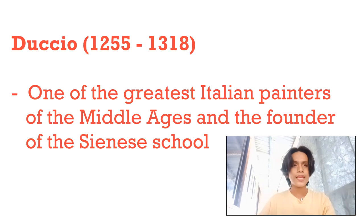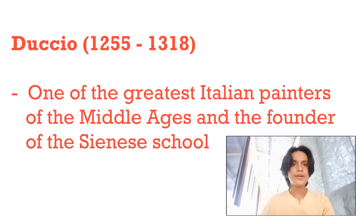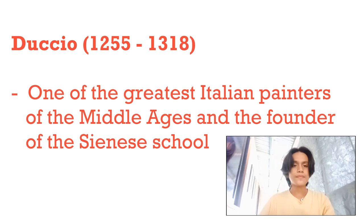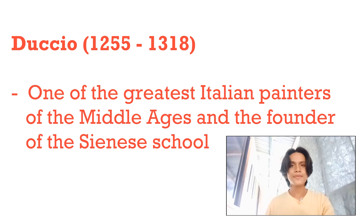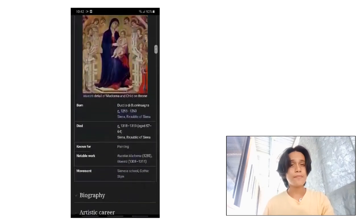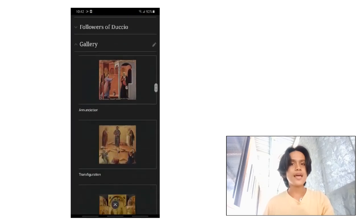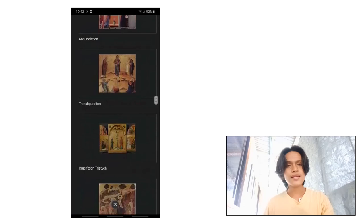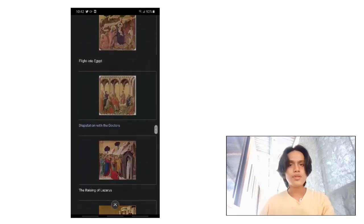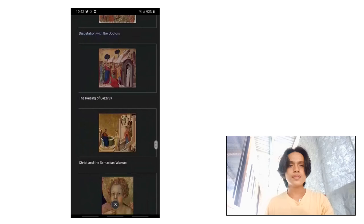Next is Duccio di Buoninsegna, or Duccio. He was born in 1255 and died in 1318. He was an Italian painter active in Siena, Tuscany, in the late 13th and early 14th century, hired throughout his life to complete many important works in government and religious buildings. Duccio is considered one of the greatest Italian painters and is credited with creating the painting styles of Trecento and as the founder of the Sienese School. He also contributed significantly to Siena's Gothic style.